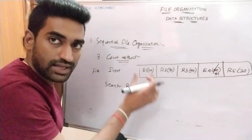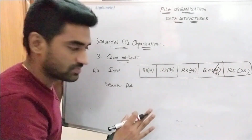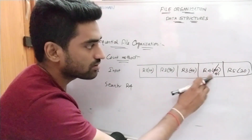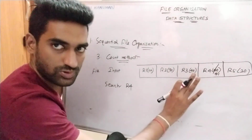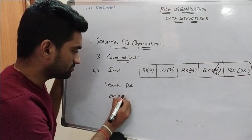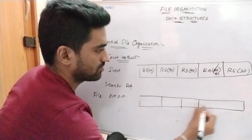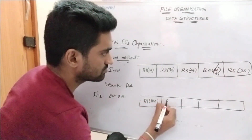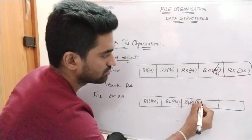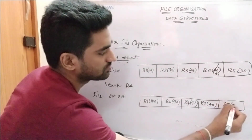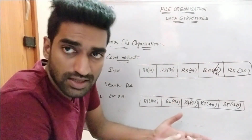In the count method, the most frequently accessed elements are placed at the first position — records with greater count values are placed first. Since r4's count (41) is now greater than r3's count (40), r4 is placed before r3. So the output file becomes: r1, r2(90), r4(41), r3(40), r5(20).